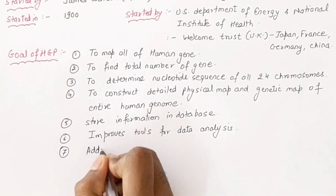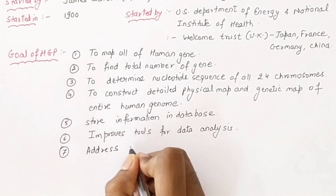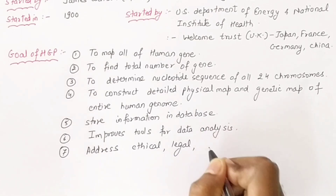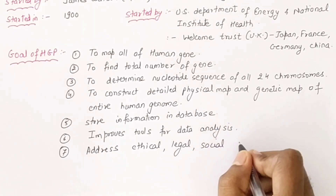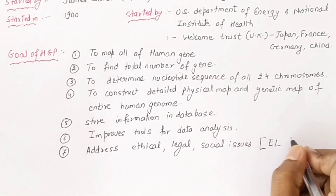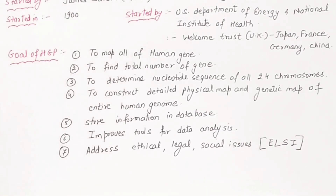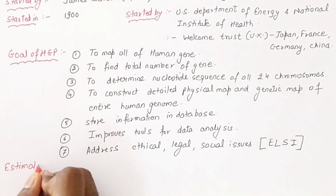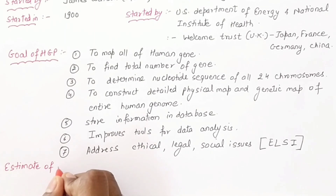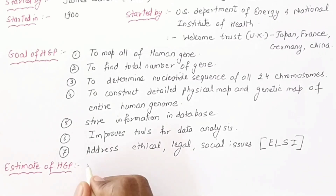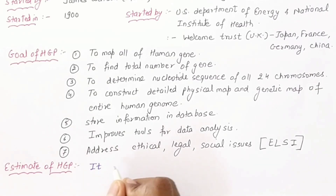Another important goal was to address ethical, legal, and social issues — abbreviated as ELSI. When the goals were set, they also needed to make an estimate. The Human Genome Project was planned for 15 years.